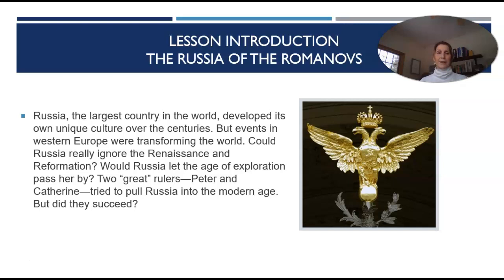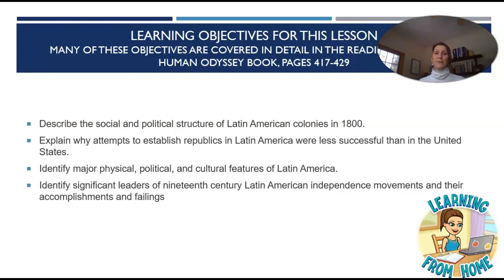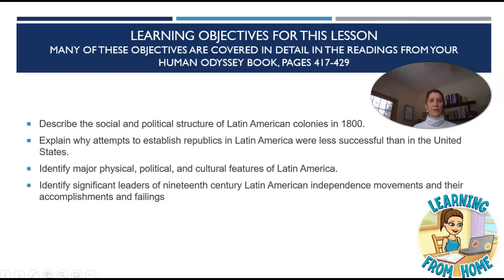Learning objectives for this lesson. Many of these objectives are covered in detail in the readings from our Human Odyssey book, pages 417 to 429, so do make sure you are doing your readings. Describe the social and political structure of Latin American colonies in the 1800s. Explain why attempts to establish republics in Latin America were less successful than in the United States. Identify major physical, political, and cultural features of Latin America. Identify significant leaders of 19th century Latin American independence movements and their accomplishments and failings.